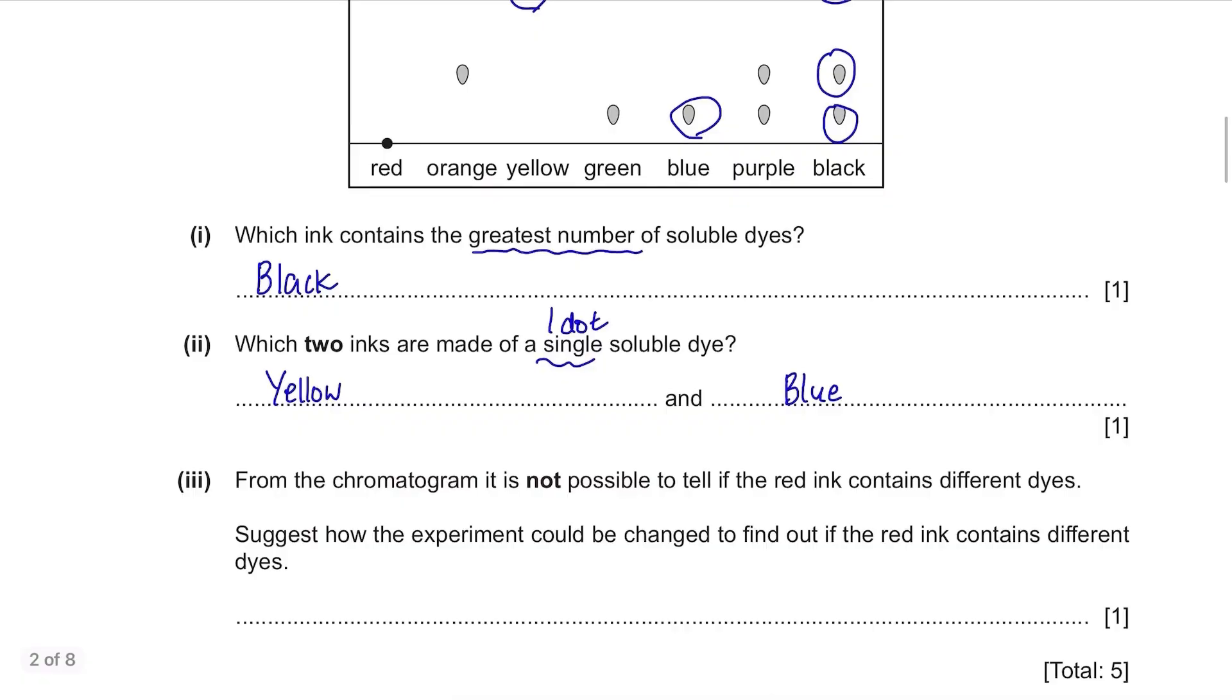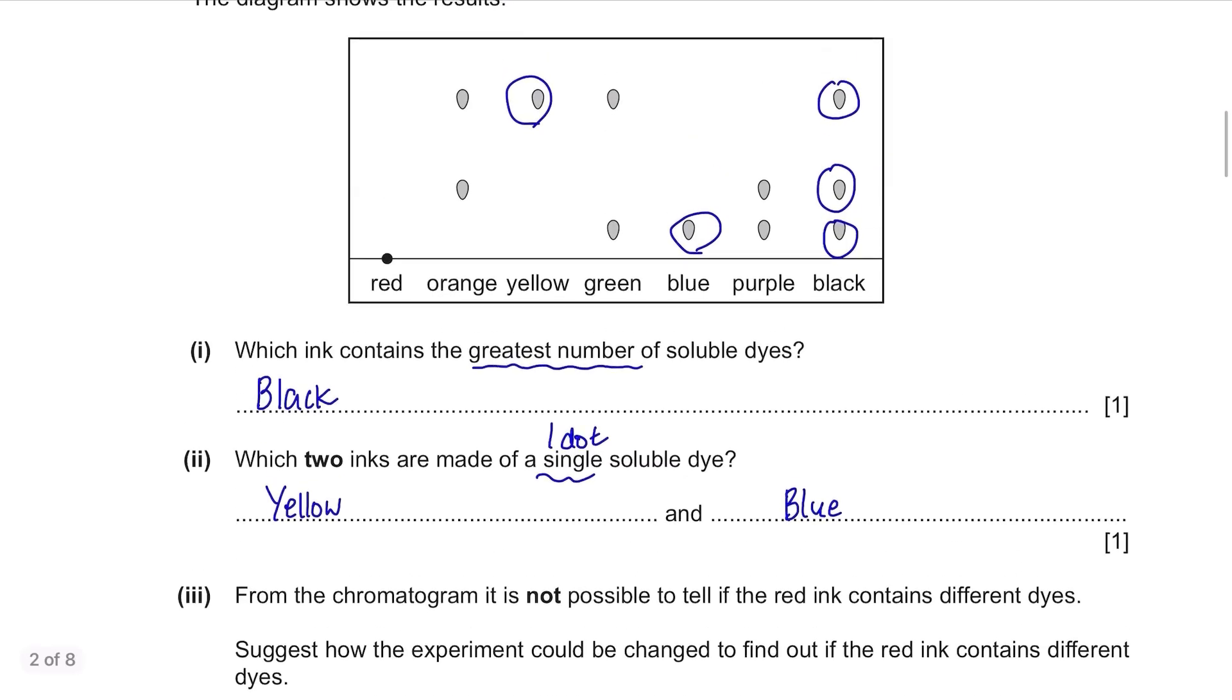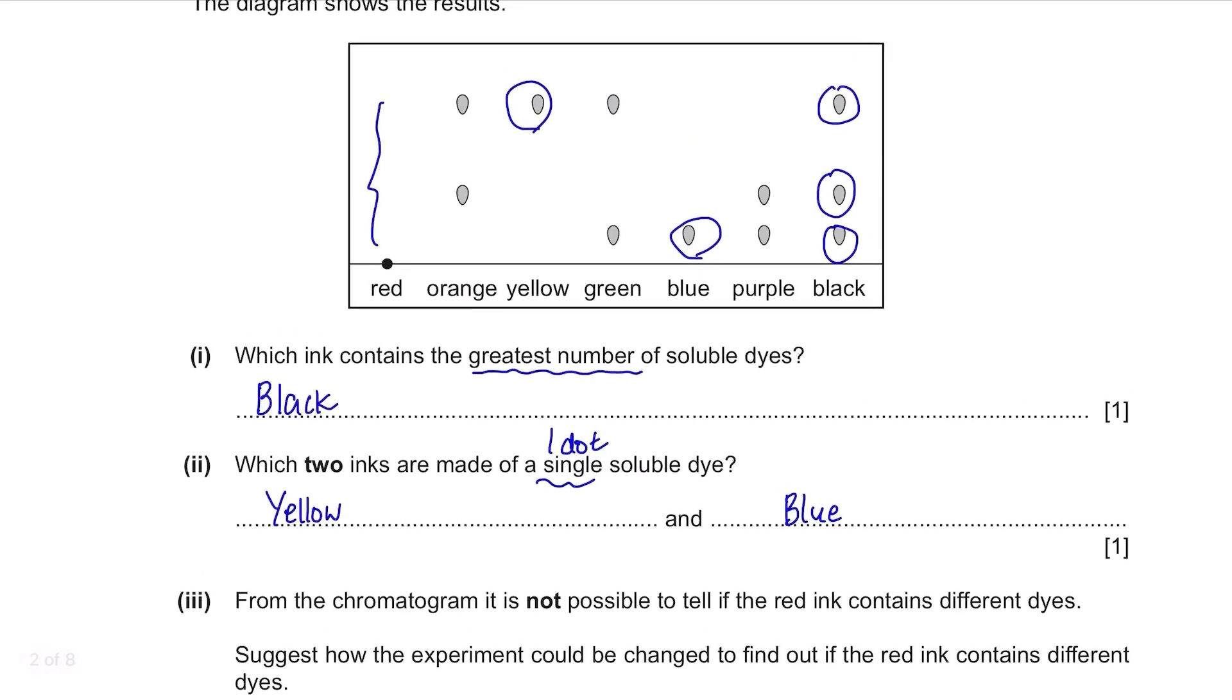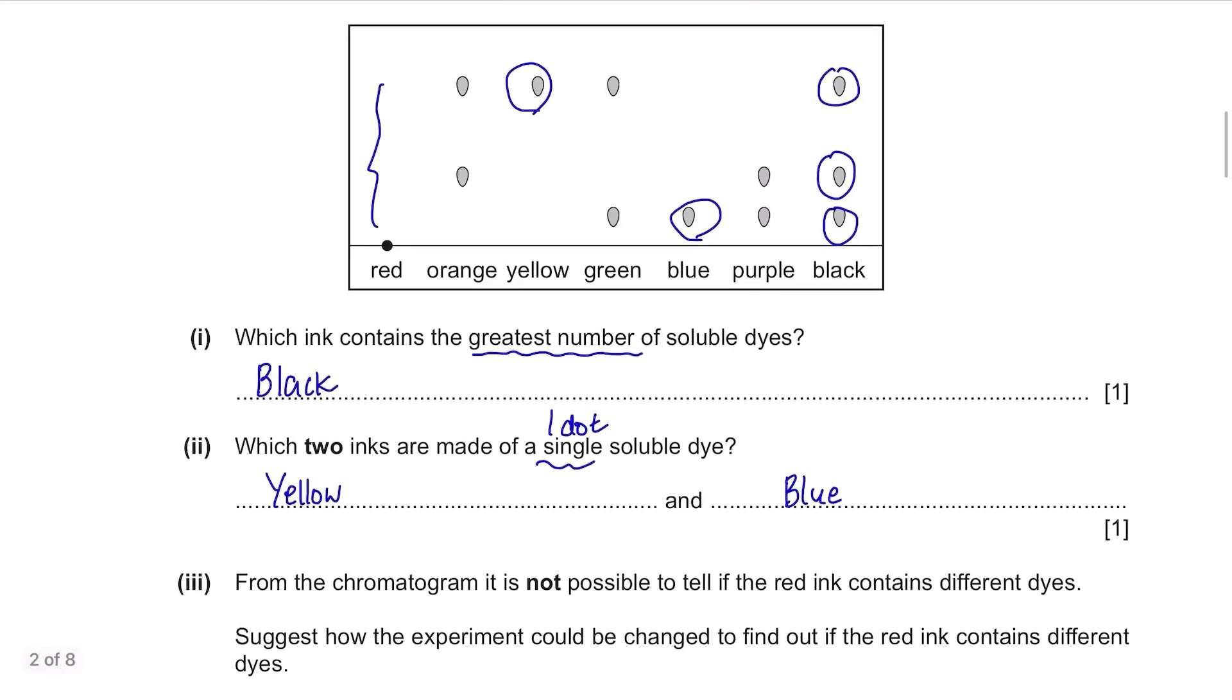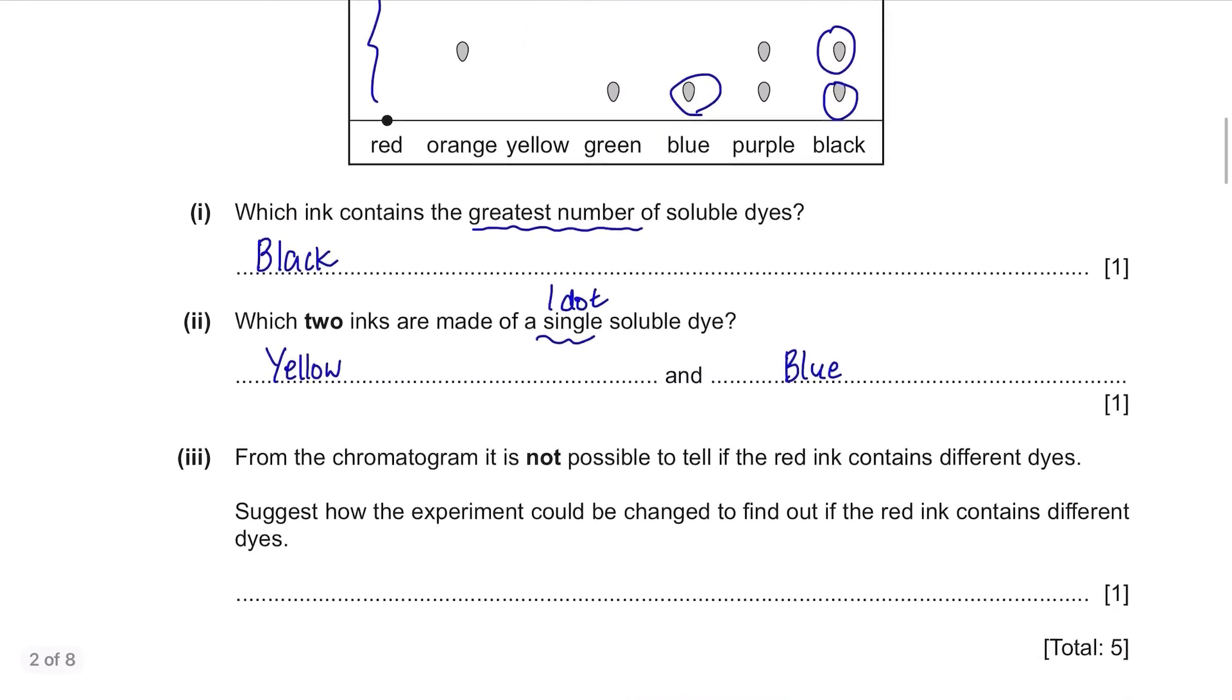From the chromatogram, it is not possible to tell if the red ink contains different dyes. Suggest how the experiment could be changed to find out if the red ink contains different dyes. Red dye does not have any spots travelled up the paper. Well the reason can be that the solvent is not working for the red ink. So use a different solvent and carry out the experiment again.